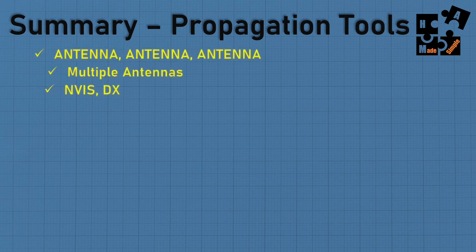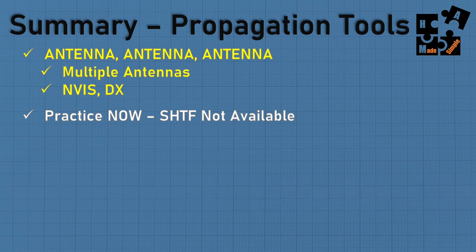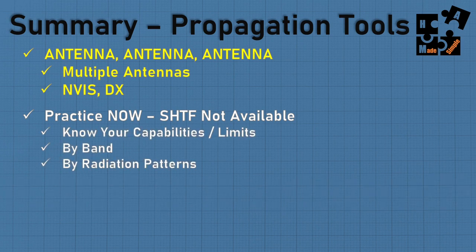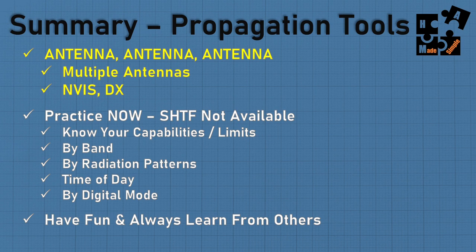Let's wrap up with a quick summary. Hopefully you're walking away thinking antenna, antenna, antenna — multiple antennas are really what you'll probably need to cover certain geographical areas, work better in certain bands, and reduce skip zones, especially when doing directed calls. Use these tools while they're still available and practice. Know your antenna capabilities and limits, make changes now while you can, focus on bands, radiation pattern direction, time of day, and which digital modes seem to work better. In the end, have fun and always learn from others.